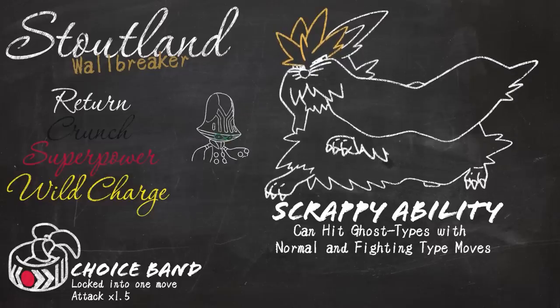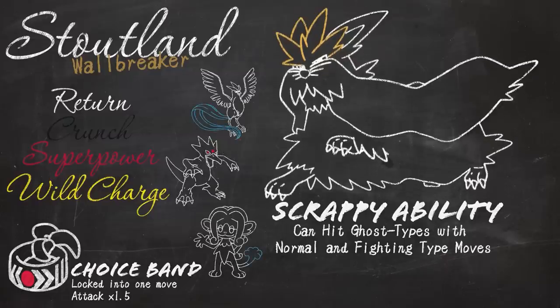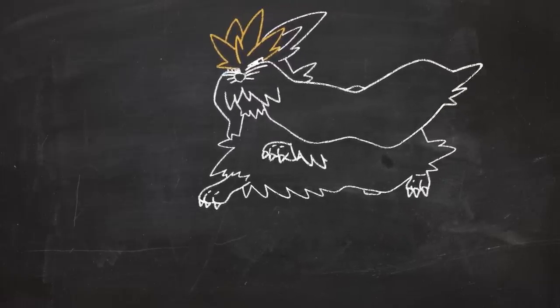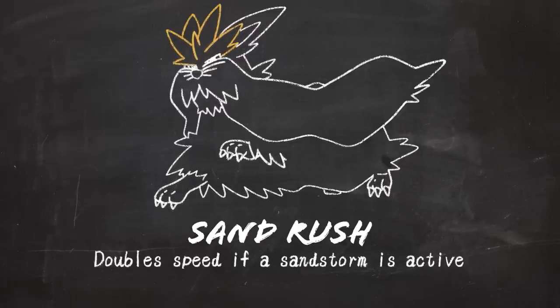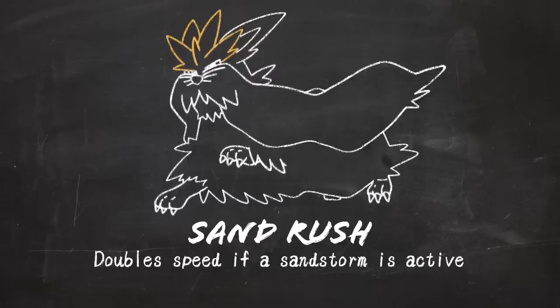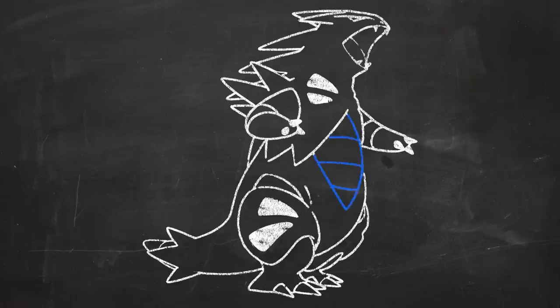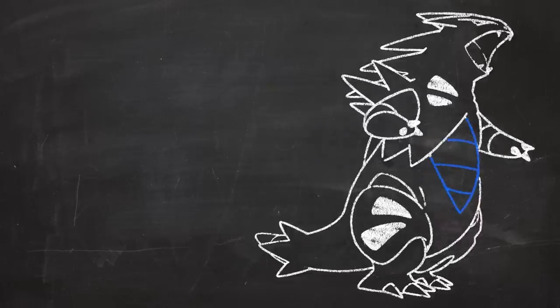Crunch did wonders versus the strongest special attacker in the tier, Beedrill, and Wild Charge could be picked up to cover whatever your team has the most issues with. But as good as Scrappy Stoutland is, his real strength lied in his other ability, Sand Rush. With the Jolly nature in Sandstorm, Sand Rush Stoutland was the absolute peak of PU speed tier, and with a Choice Band bolstering his damage output, he became a menace. Since there was no Sand Stream users in PU, Stoutland could only rely on other Pokemon running Sandstorm, making the combo clunky but still relatively powerful. So now I need a Sandsetter.